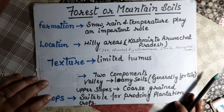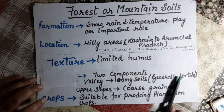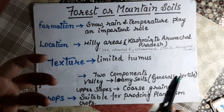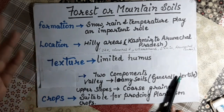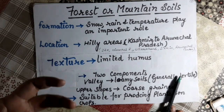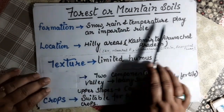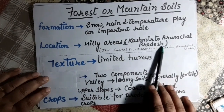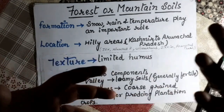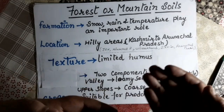Forest soils are found in hilly areas with rich forests. The quality of soil varies — in mountainous regions with steep slopes, the top layer is washed off. Snow slabs and material slide down the steep slopes and settle in the nearby valleys and forest areas.